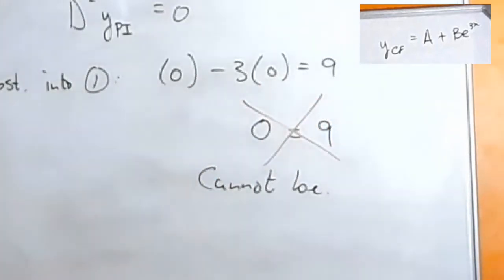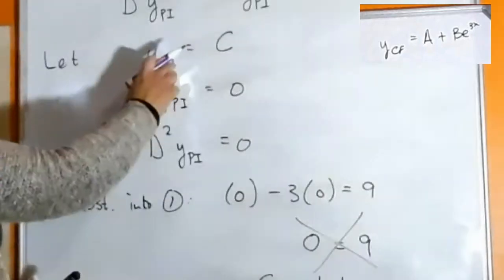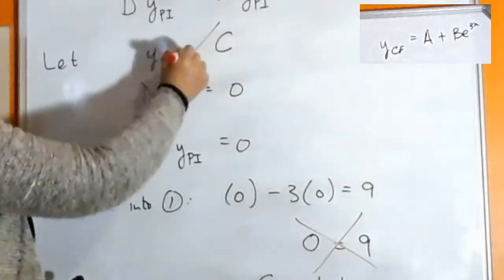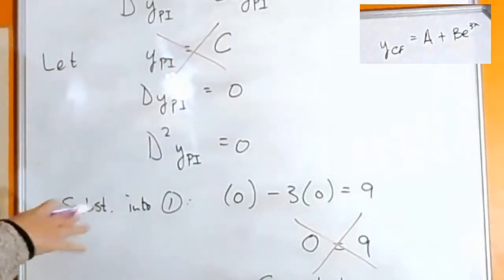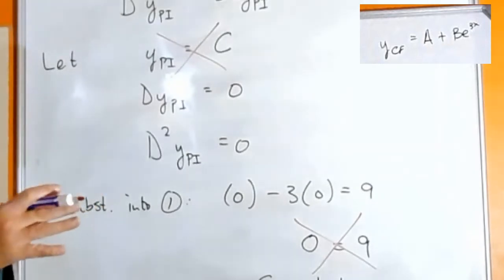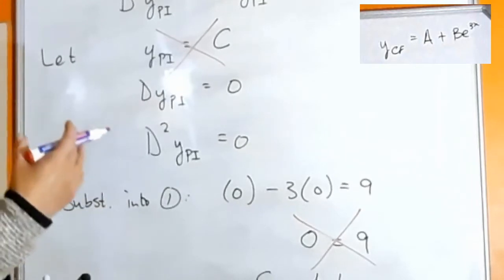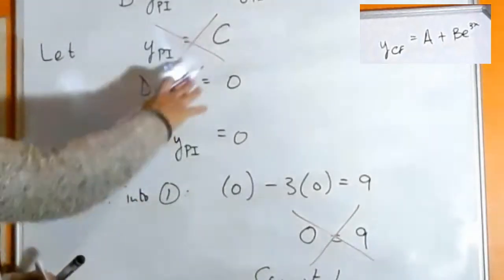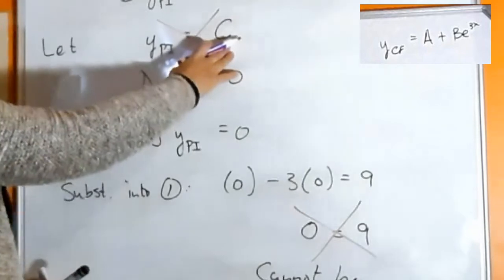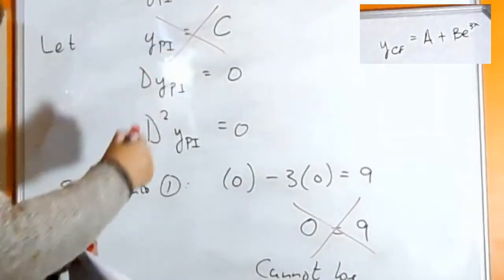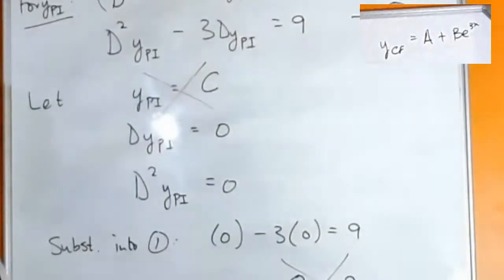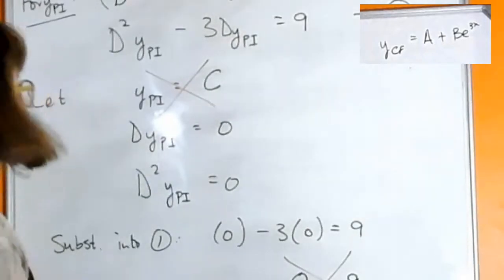That's not possible. Our equation doesn't balance, which means the trial function that we've got is not the right one, and that is what the trial function is—each time you're just testing a function. If it doesn't work out, you move on to a different form of that trial function. So your particular integral being a constant doesn't work. So let's try a different trial function.